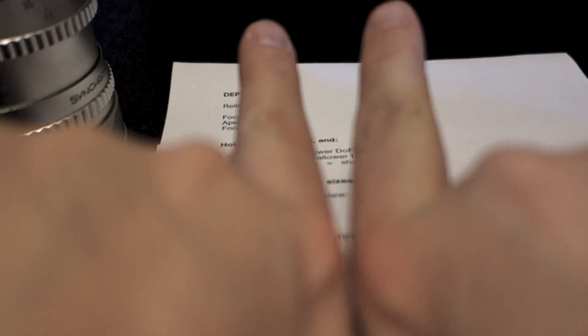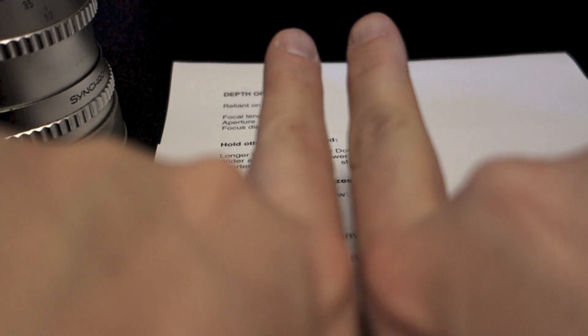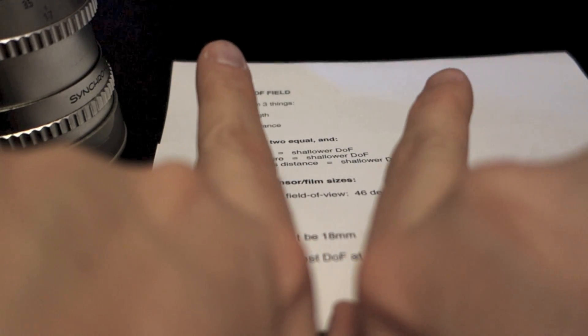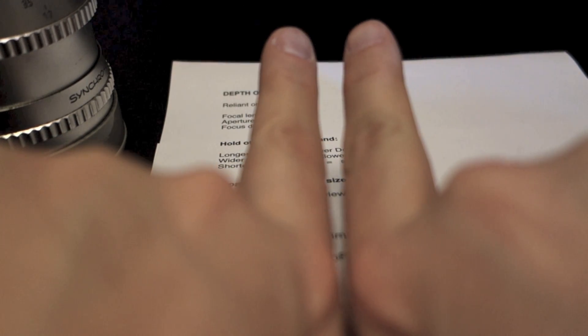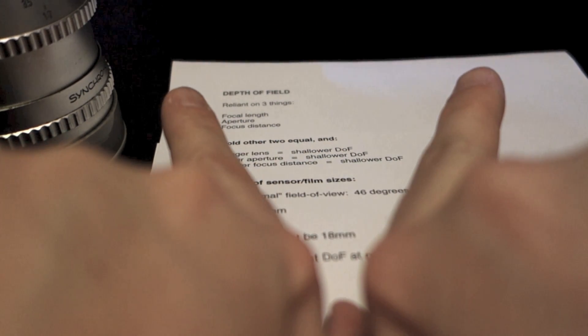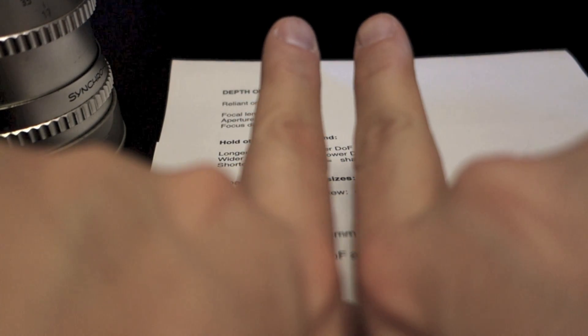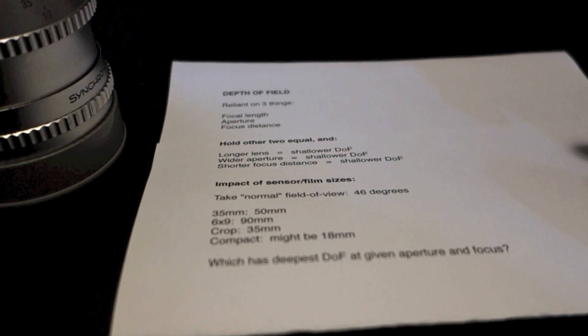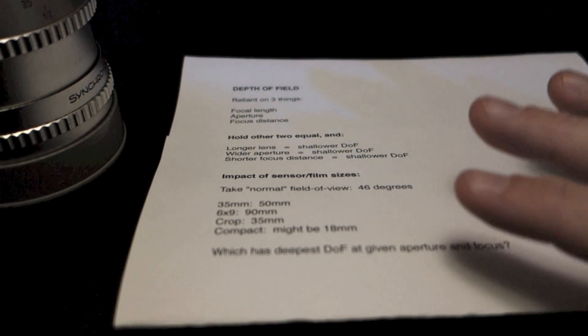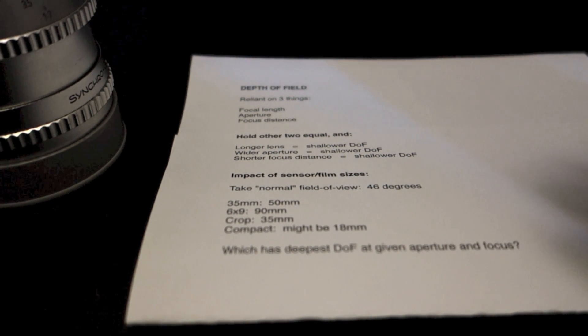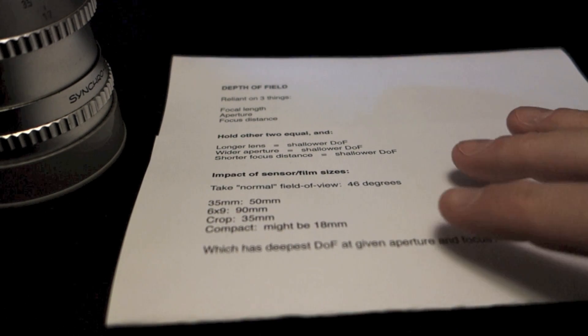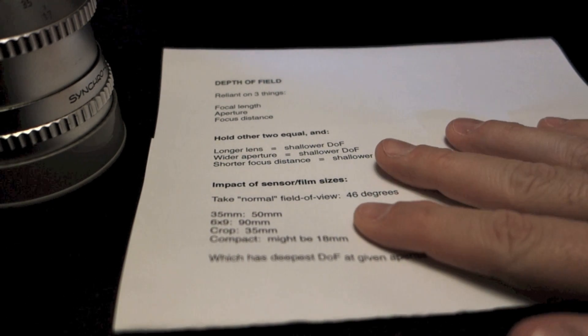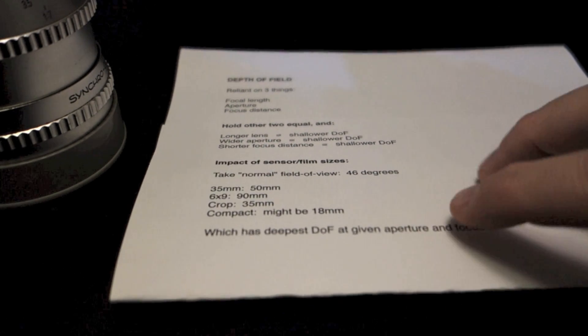So let's talk about field of view for a second. Field of view is how wide or narrow the scene in front of you is taken in by the lens. A narrow field of view is like this, and a wide field of view is like this. Telephoto lenses generally have a narrow field of view, and wide angles have very wide fields of view. So let's hold field of view constant and say that I want a normal sort of field of view. And on a 35mm camera, that's generally considered to be 46 degrees.